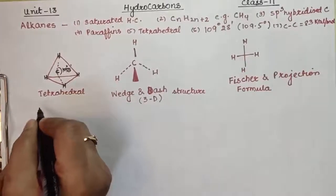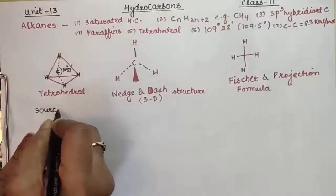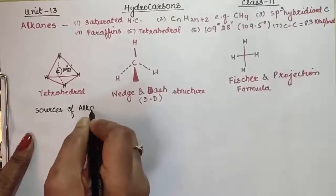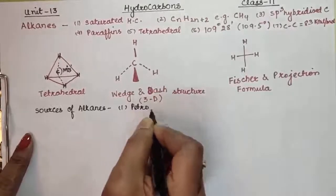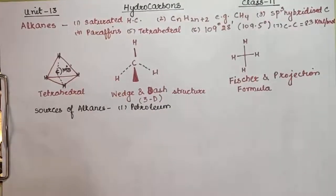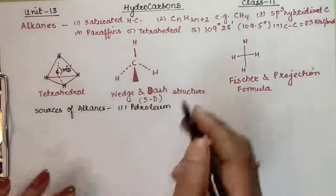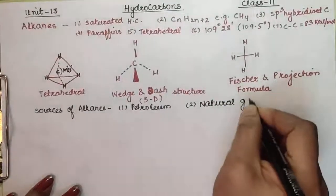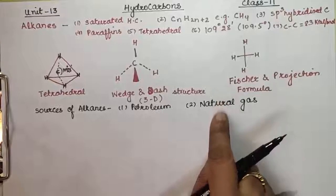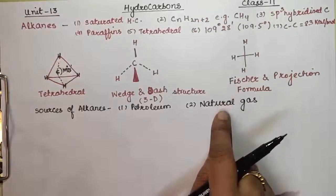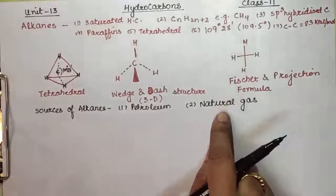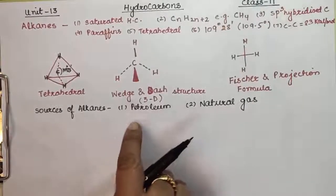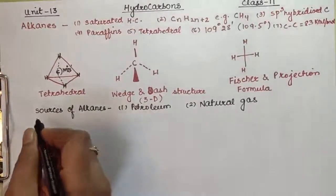Now let's talk about the sources of alkanes — the natural sources. The two main natural sources are, number one, petroleum. In petroleum we get many liquid hydrocarbons, and these hydrocarbons can have up to 40 carbon atoms. The other natural source is natural gas. In natural gas, mainly lower alkanes are present: 80% methane, 10% ethane, and the remaining 10% is a mixture of higher members.